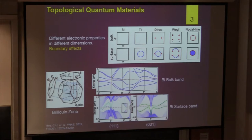Let's look at a detailed example — that's bismuth. This is the three-dimensional Brillouin zone of bismuth. We calculate the bulk band structure with spin-orbit coupling. You can see there is a clear band gap.